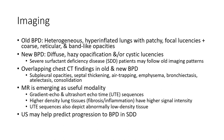Imaging: for old bronchopulmonary dysplasia — heterogeneous, hyperinflated lungs with patchy focal opacities, reticular and band-like opacities. New bronchopulmonary dysplasia shows diffuse haziness, and cystic lucencies. Severe surfactant deficiency disease patients may follow a different imaging pattern. Overlapping chest CT findings in old and new BPD include subpleural opacity, septal thickening, air trapping, emphysema, bronchiectasis, atelectasis, and consolidation.